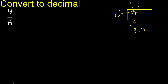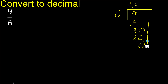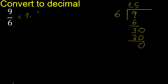6 multiplied by 5 is 30. Subtract: 30 minus 30 is 0. The remainder is 0, so we finish — there are no more digits to bring down. The result is 1.5.